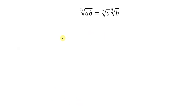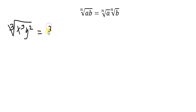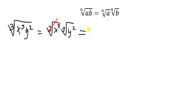The nth root of AB is equal to the nth root of A times the nth root of B. For example, the cube root of x raised to 3 times y raised to 2. We can separate this as the cube root of x raised to 3 times the cube root of y raised to 2. The cube root of x cubed cancels to give x. And the cube root of y raised to 2 remains as cube root of y squared.